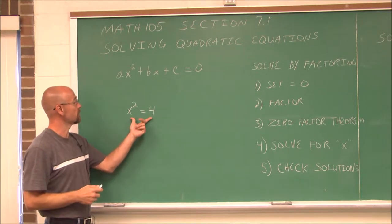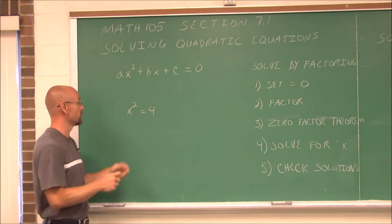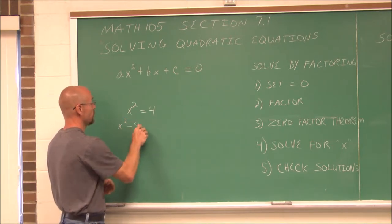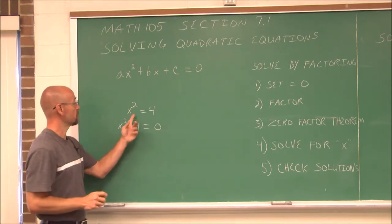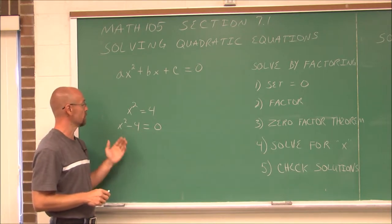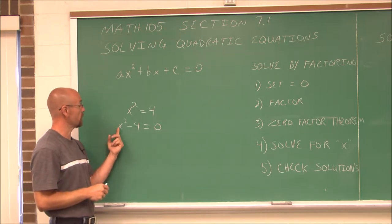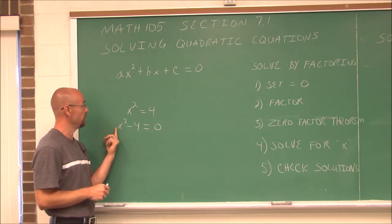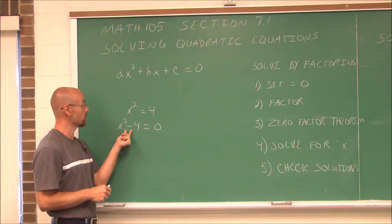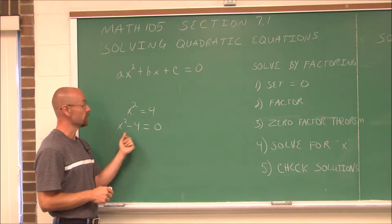If we look at this equation, our first example here, the first thing we want to do is set it equal to 0. By doing so, we just subtract 4 from both sides, so we get x squared minus 4 equals 0. If we identify a, b, and c: a is the coefficient of the x squared term, which is 1. There is no x to the first power term, so our coefficient there is 0. And our constant is negative 4.